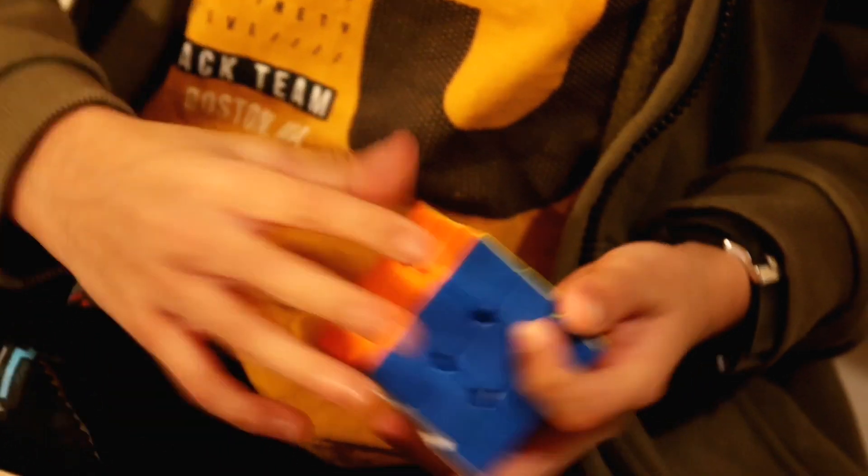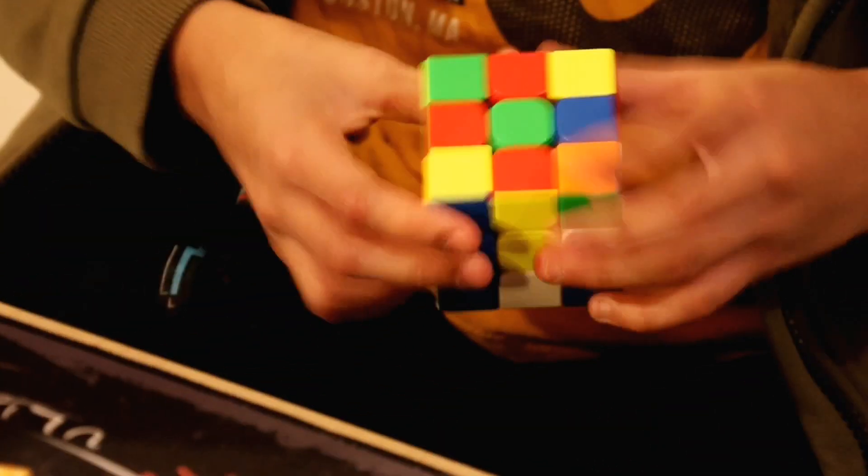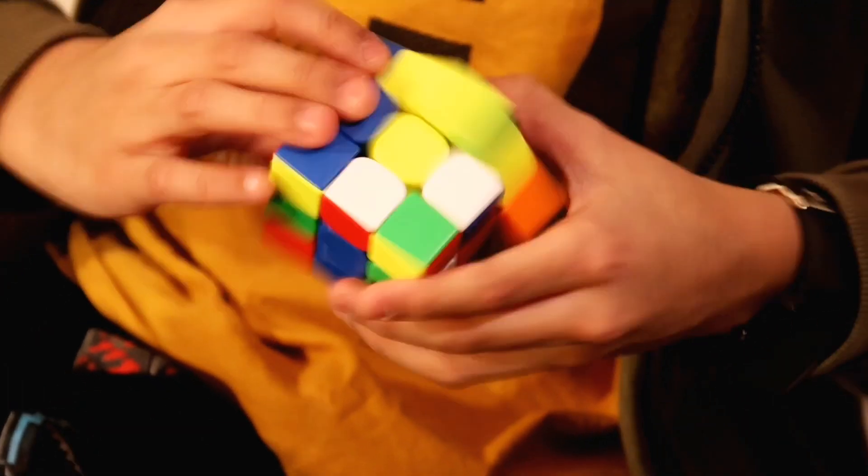Now once you've got the lube in, you want to turn it back at a 45-degree angle, wipe it all up, and then you want to do some turns to get what the cube is called breaking.